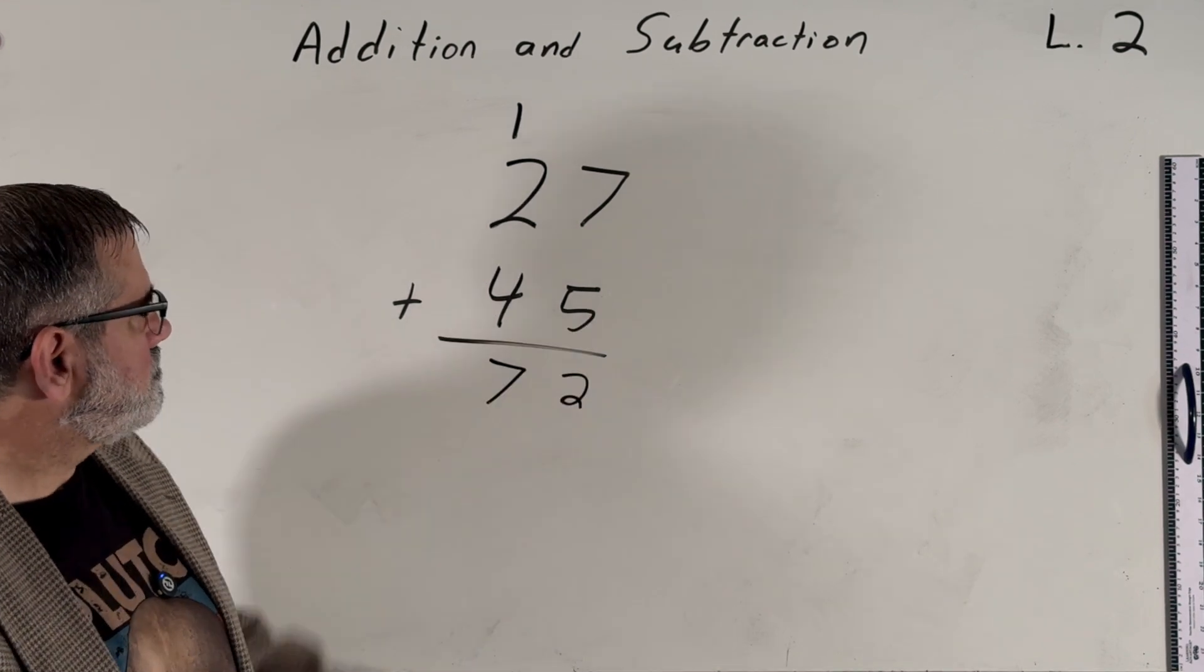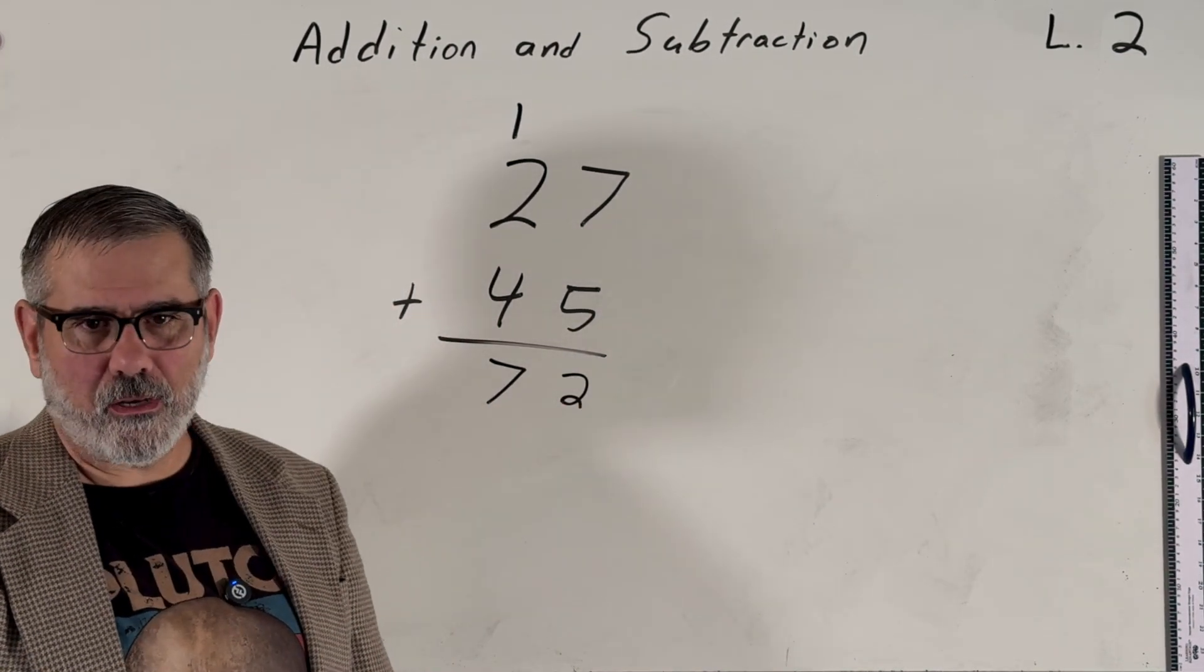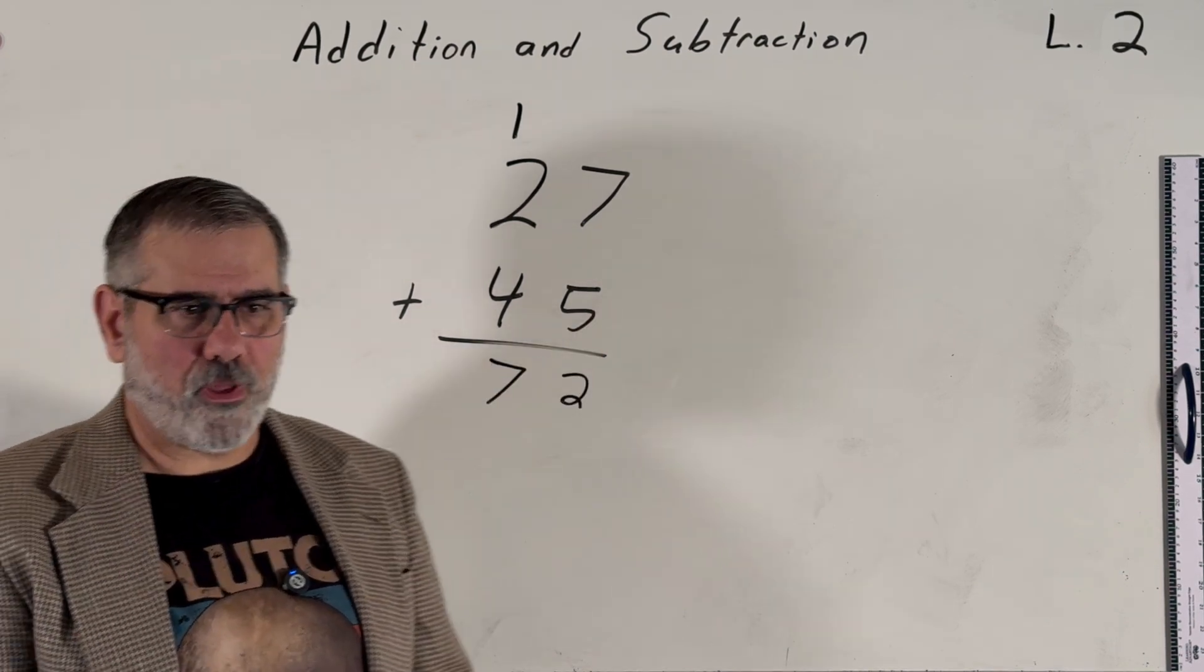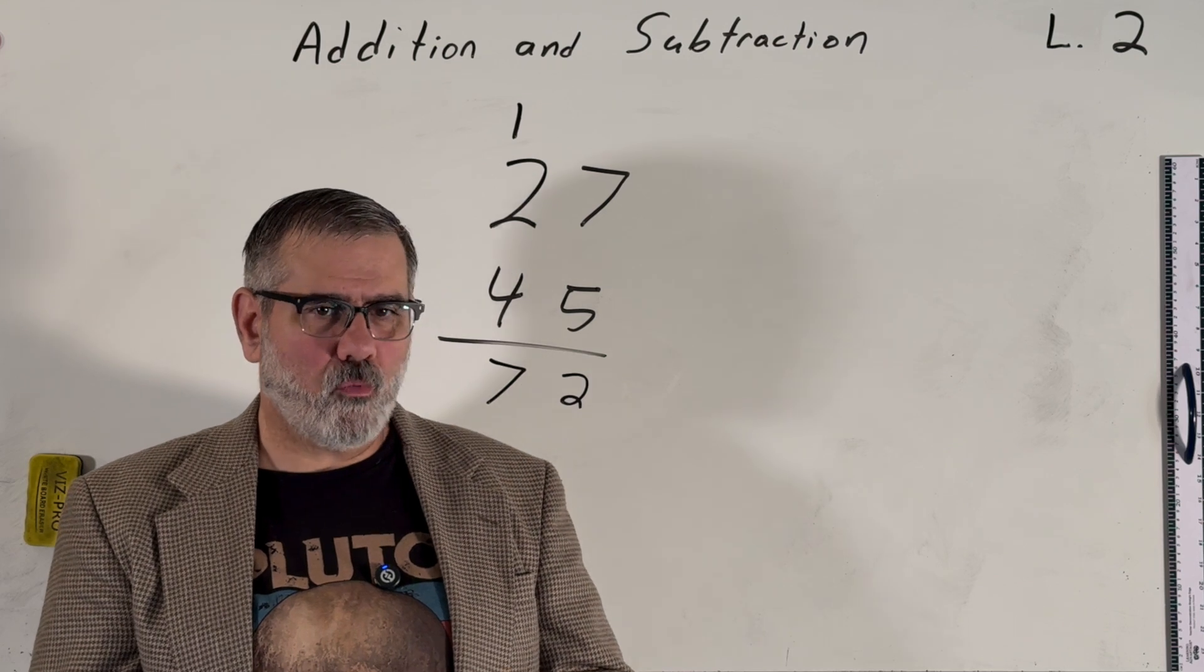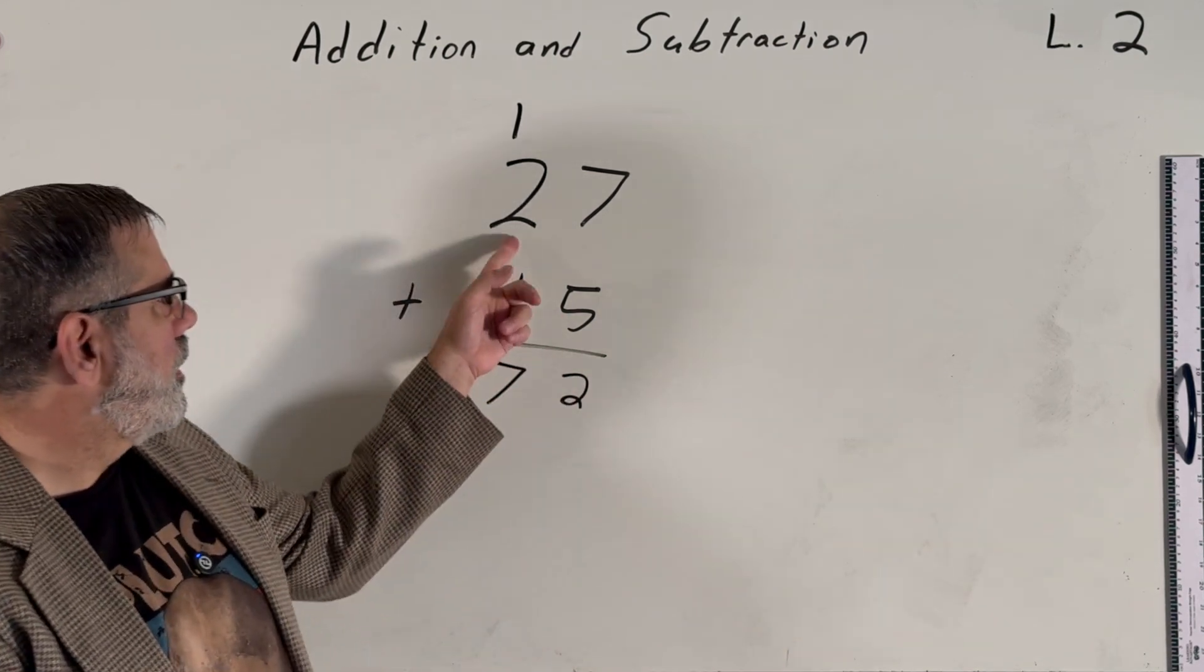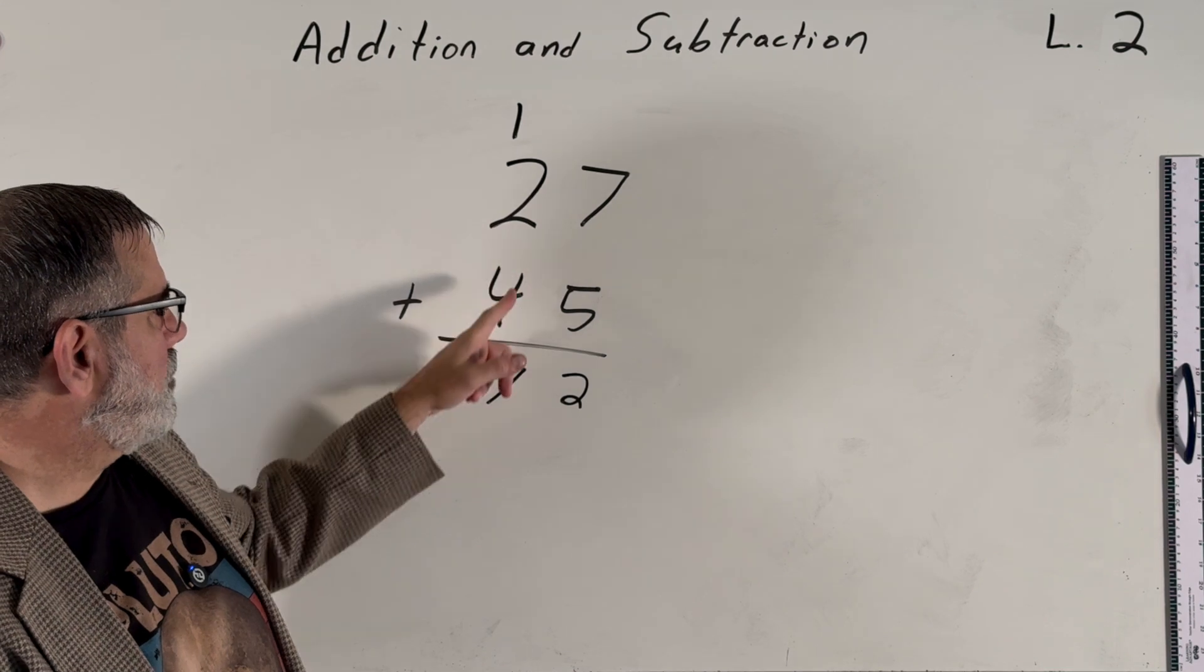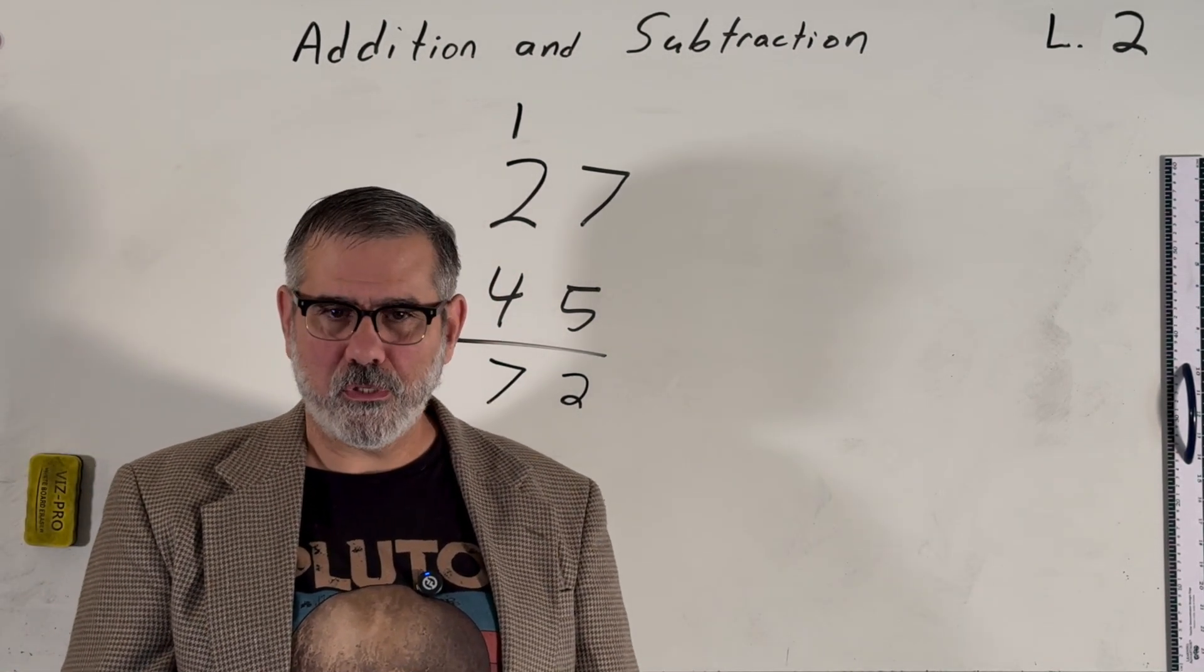So you can kind of think of this as that funny money police where you're not allowed to have more than nine of the same bill. And so whenever we had seven plus five, we would have had 12 $1 bills. We have to trade 10 of those $1 bills for a $10 bill, giving us one $10 bill plus two $10 bills plus four $10 bills. And we would have two $1 bills still available to us.